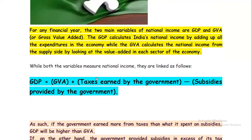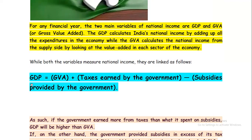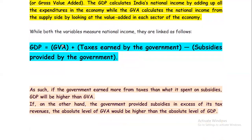If we try to frame a formula between these two, with respect to national income, we get: GDP is equal to GVA plus taxes earned by the government minus subsidies provided by the government. So GDP equals GVA plus the taxes the government earns, minus the subsidies the government provides to industry.